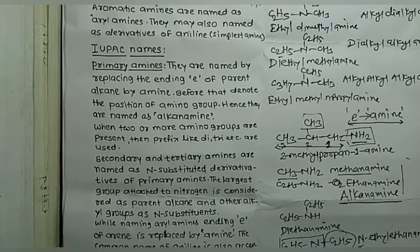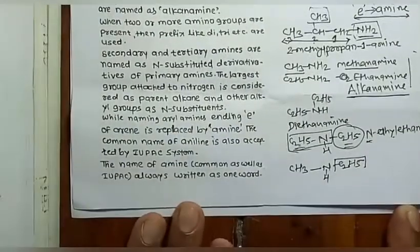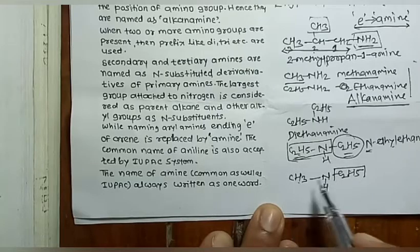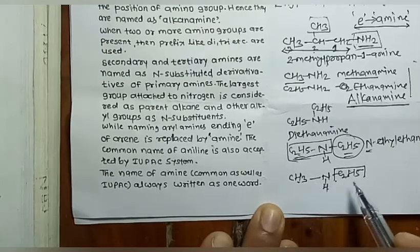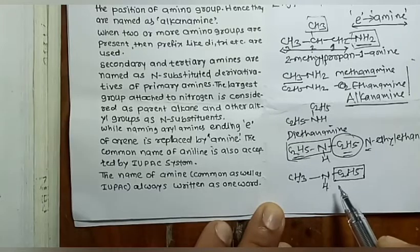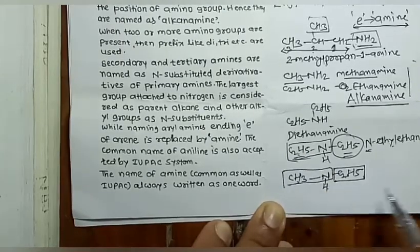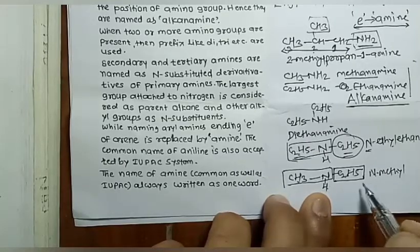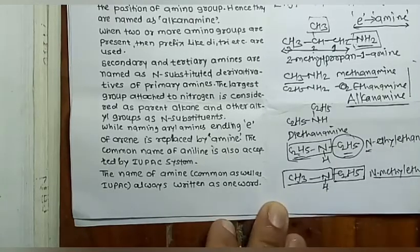For an unsymmetrical secondary amine like CH₃NHC₂H₅, the higher alkyl group — ethyl, containing two carbons — is considered the parent alkane, giving 'ethanamine'. The methyl group is the N-substituent. Therefore the IUPAC name is 'N-methylethanamine', written as a single word.